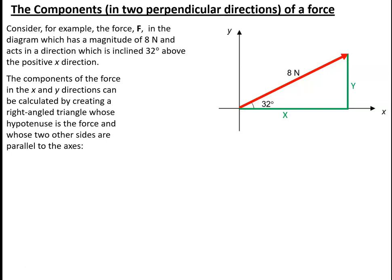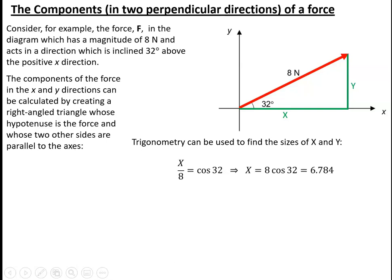Then, using GCSE-style trigonometry, we can say that X divided by 8 is the adjacent divided by the hypotenuse, so that is cos32, which means that x is 8 times cos32, or 6.784.